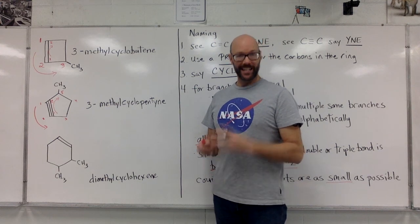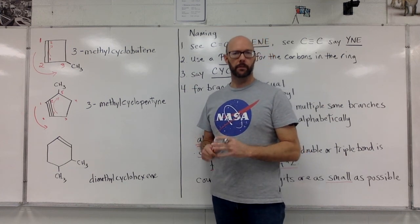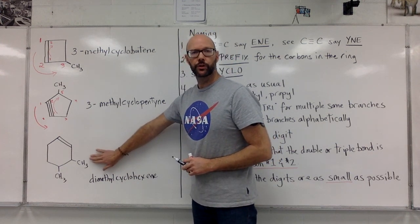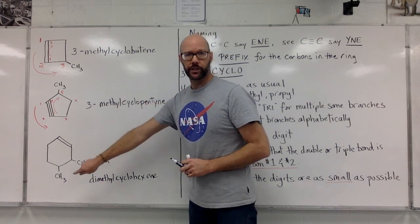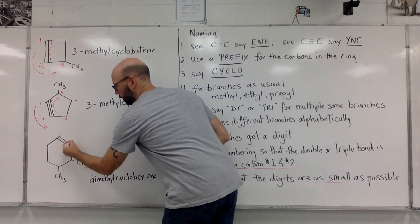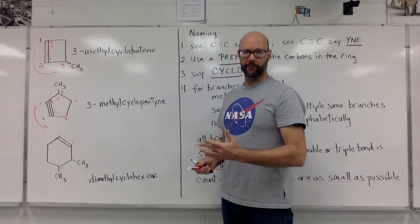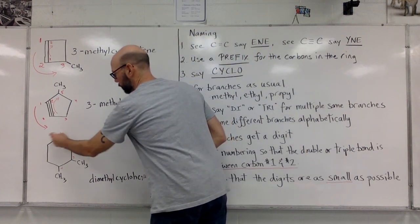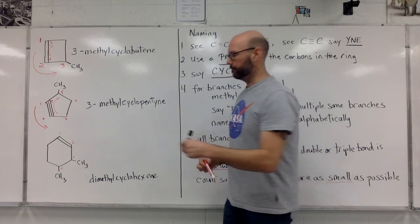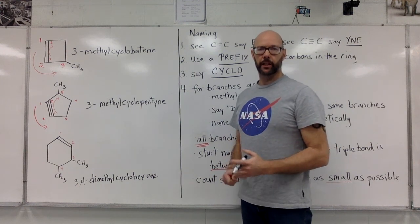Now the numbering: each branch is going to be assigned a digit, and you have to start counting so the double bond is in between carbon numbers one and two. This branch is on the right-hand side, so we'll get smaller numbers going clockwise. Carbon one, two, three, four — going clockwise gives us positions three and four for the methyls. Going counterclockwise would give us five and six. Three and four is smaller than five and six, so we have 3,4-dimethylcyclohexene.